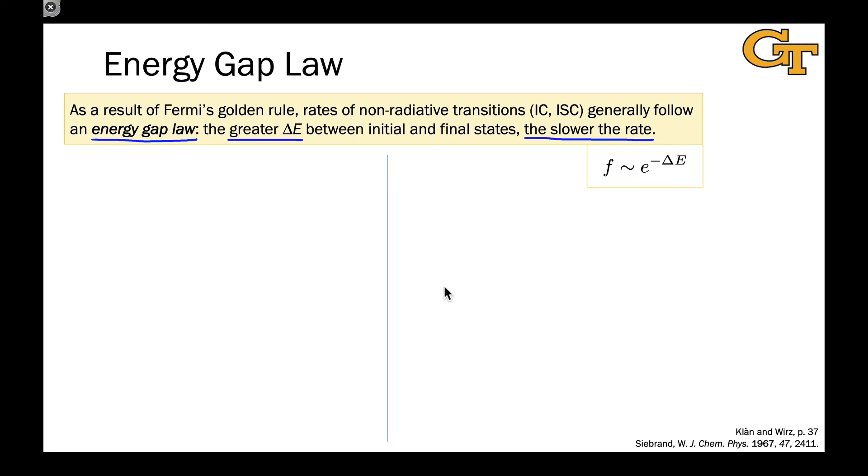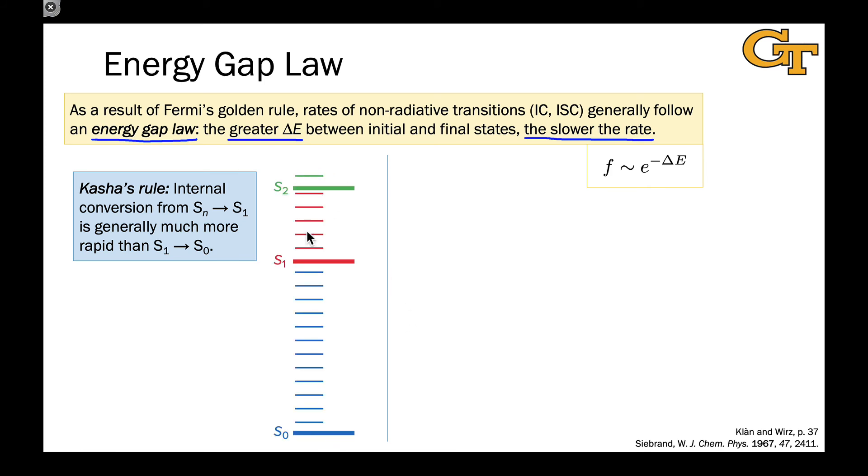Let's look at two examples of this. The first example we've already seen. Kasha's rule. The idea that internal conversion from higher singlet states, say, down to S1 is much more rapid than conversion of S1 back to S0. Why is this? Well, S1 and S2 and S3 and S4 and so on and so forth are much more closely spaced in energy, in general, than S1 and S0. Usually there's a huge gap here between S0 and S1, but the gaps between S1 and S2, S2 and S3, etc., are much smaller. Those smaller gaps result in faster transitions from S2 to S1 or S3 to S2 or S4 to S3, et cetera.